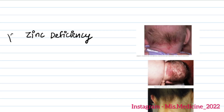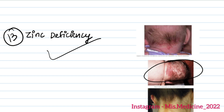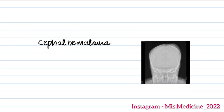Question 13: a newborn baby's scalp image was given due to zinc deficiency. Question 14 was cephalohematoma — there was some bulging on the scalp shown.